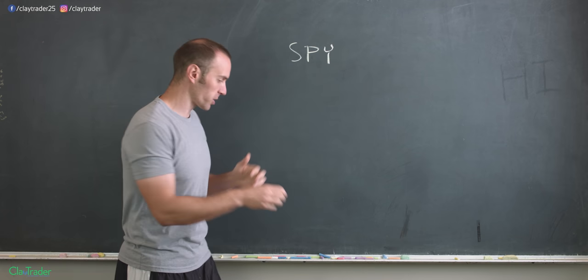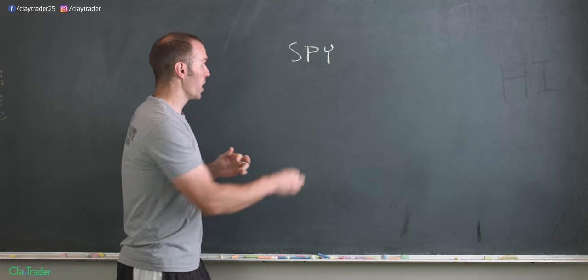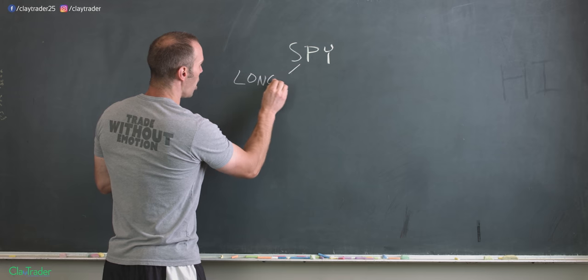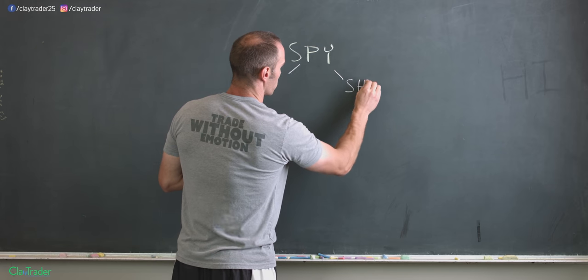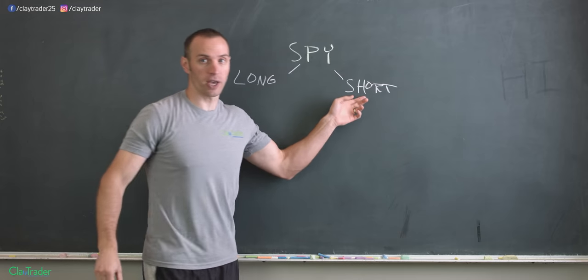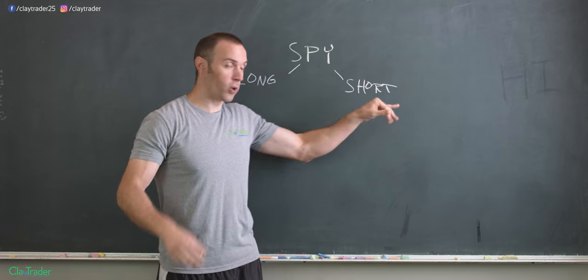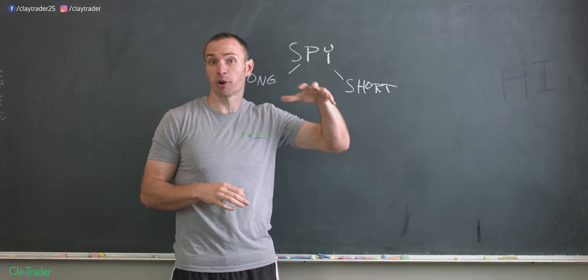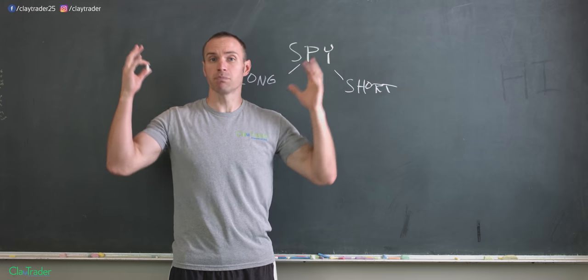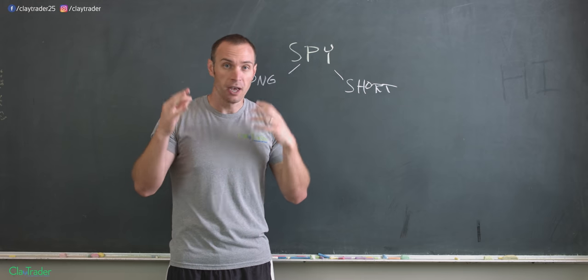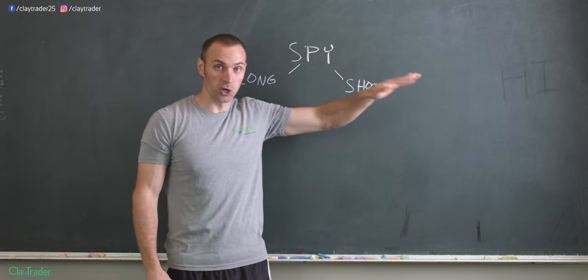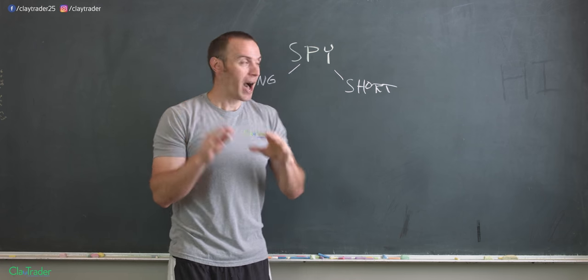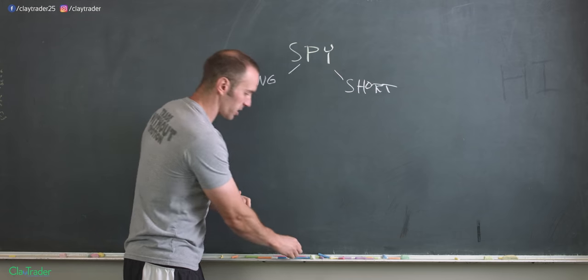The way SPY works is within two branches of a trade. You could go long or you could go short. For those of you that are brand new just getting started, going short doesn't mean you only hold for like two minutes. It means that you make money when prices go down. Super bizarre concept, mind blowing the first time you hear it, but yes, believe it or not, in the world of trading you can make money when prices go down and that's what shorting represents.